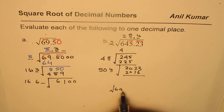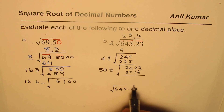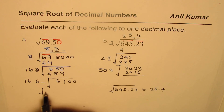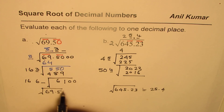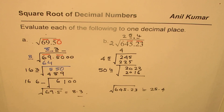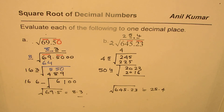Square root of 645.23 is approximately equal to 25.4 to 1 decimal place. And square root of 69.5 equals 8.3 to 1 decimal place. I hope that helps you to practice the method of finding square root. Thank you and all the best.